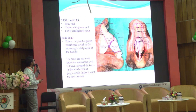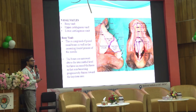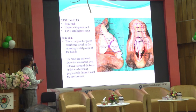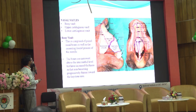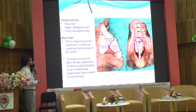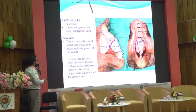The nose is divided into two vaults: the bony vault and the cartilaginous vault. The cartilaginous vault is further divided into upper and lower cartilaginous vaults. The bony vault is composed of the nasal bone and frontal process of the maxilla. The nasal bone is thick in the upper part and progressively becomes thinner in the lower part, forming a junction with the upper lateral cartilage at the keystone point.